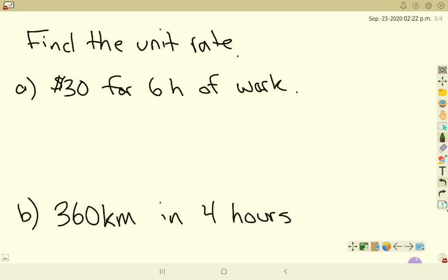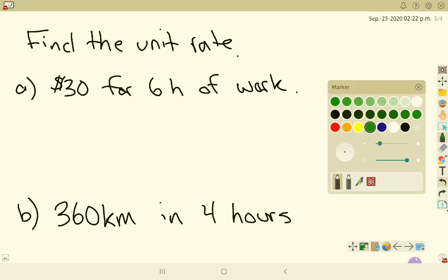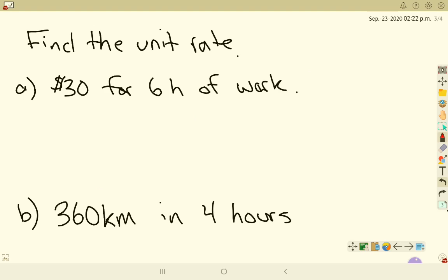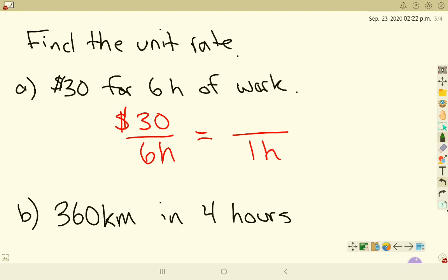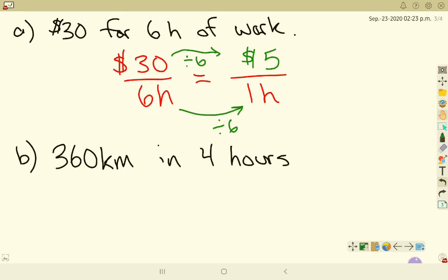So let's find the unit rate of a couple of these things. So if I had $30 for 6 hours of work, if you want to pause it and you want to find this on your own by all means, so I would start off by writing my rate. My rate is $30 per 6 hours of work. To change it to a unit rate, I want it per 1 hour of work. So to go from 6 down to 1, I simply divide by 6, that one's nice and easy. And if I take 30 and divide by 6, I get $5 per hour. Hopefully your first job pays you more than $5 per hour.